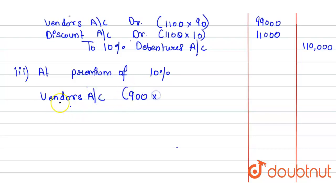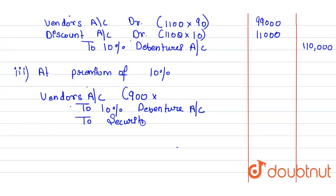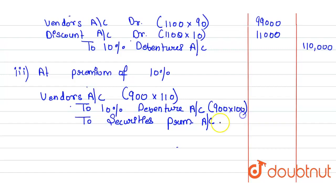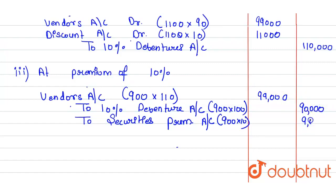The entry will be: Vendor's Account debit, to 11% Debentures Account, to Securities Premium Account. The debenture face value is Rs. 100, premium is Rs. 10, and total issue price is Rs. 110. For 900 debentures: debentures account Rs. 90,000 and securities premium account Rs. 9,000, totalling Rs. 99,000.